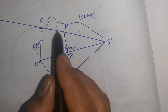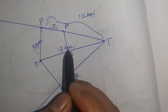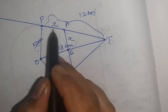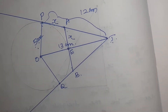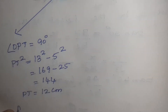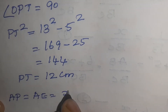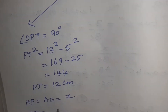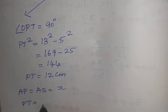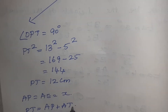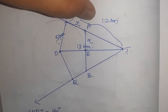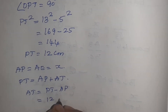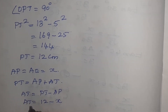Now, I am taking AE as X. If I take AE as X, since A is the external point, the length of the tangents are equal. So AP equal to AE equal to X. Next, PT equal to AP plus AT. From that we can calculate AT equal to PT minus AP. PT is 12 centimetre and AP is X. So, AT equal to 12 minus X.